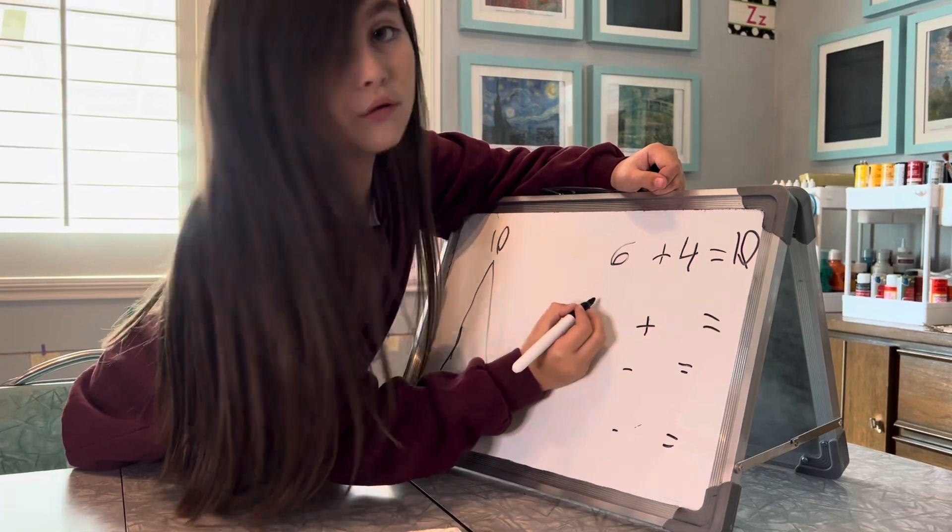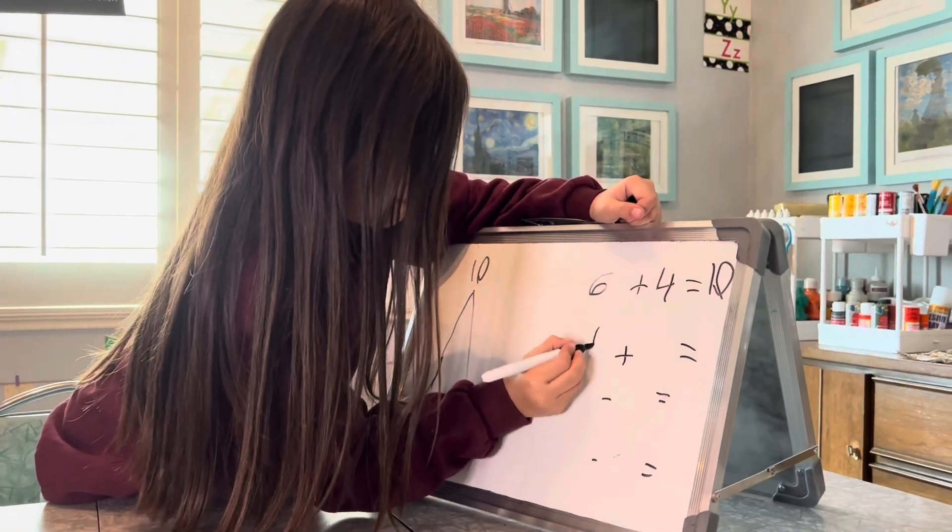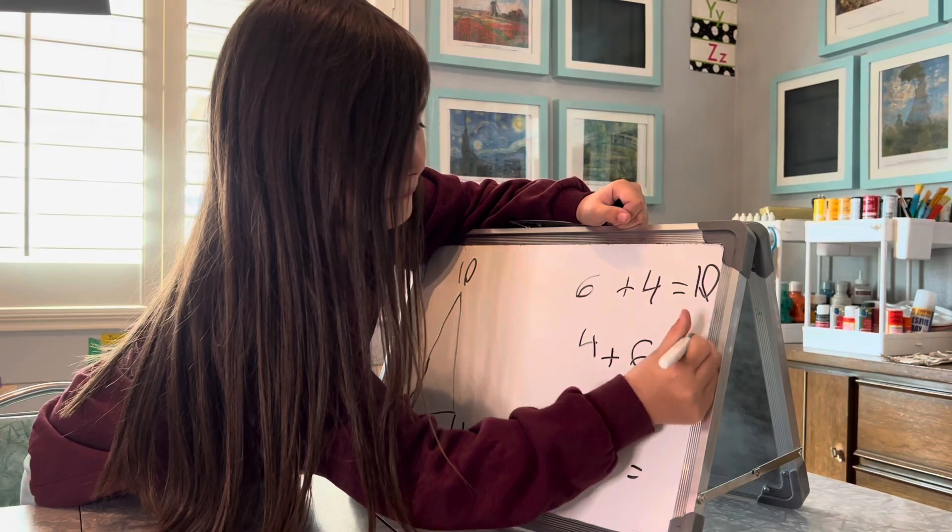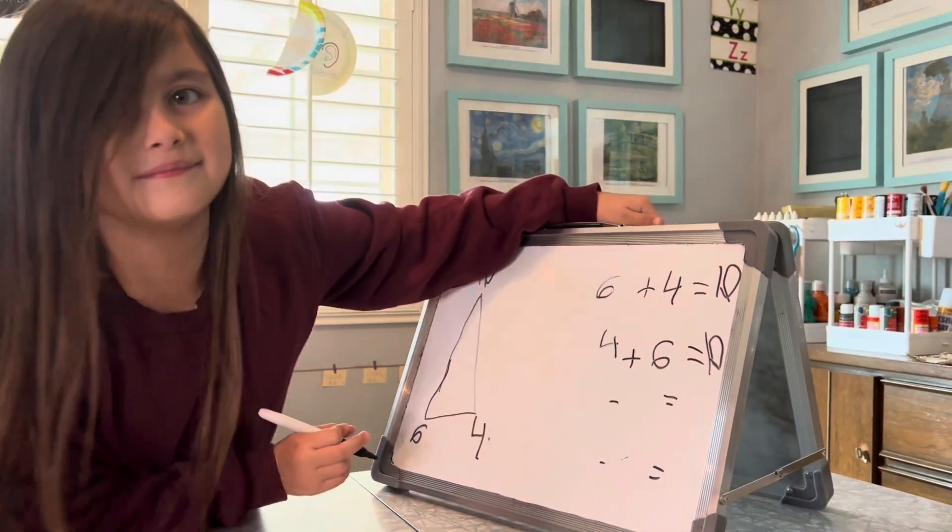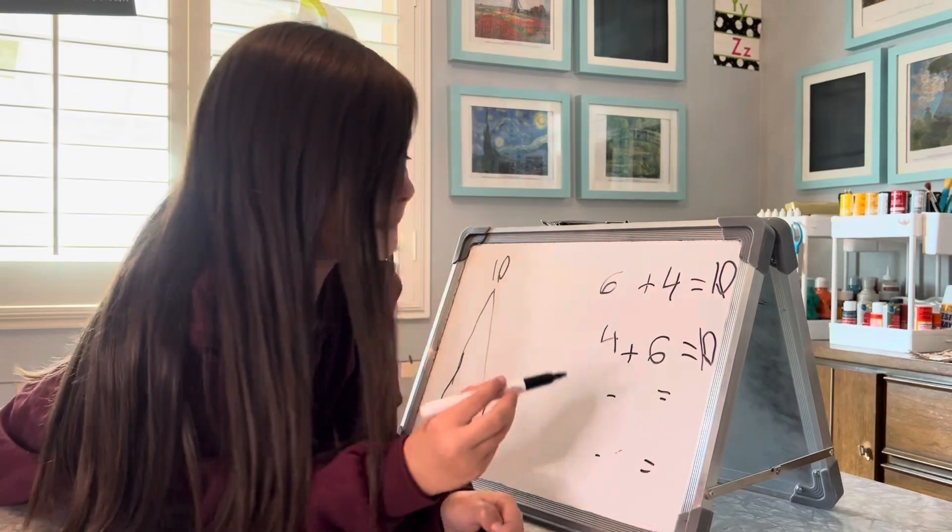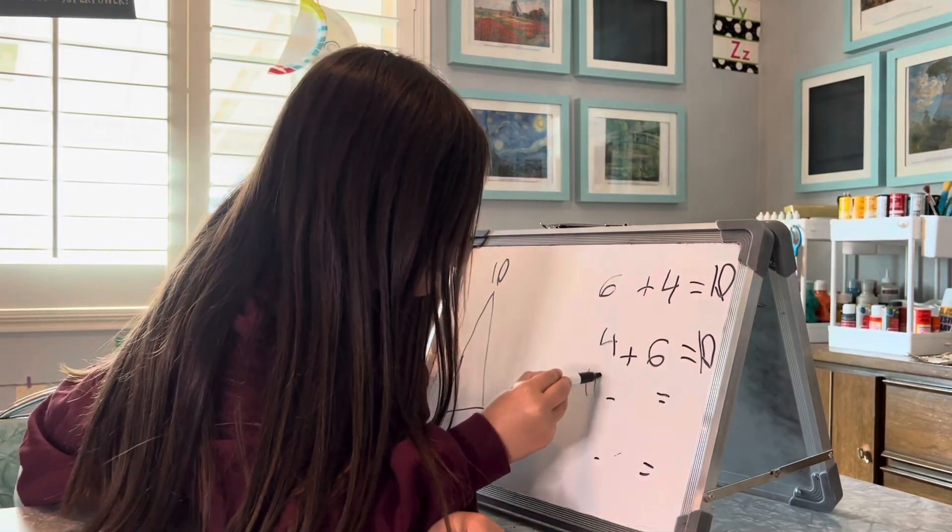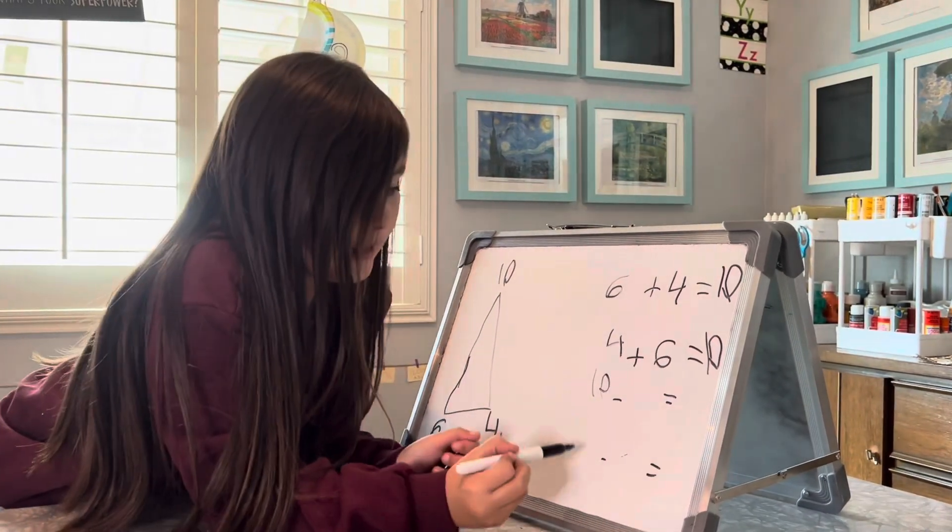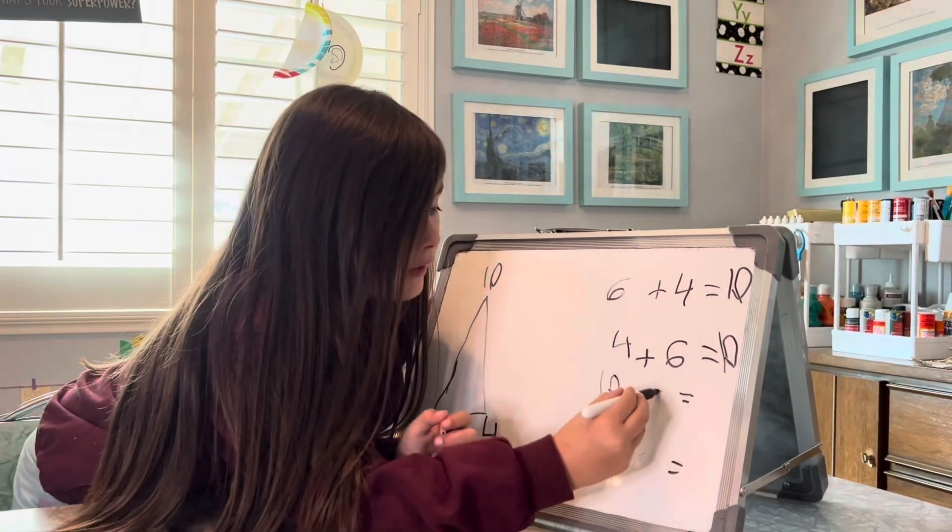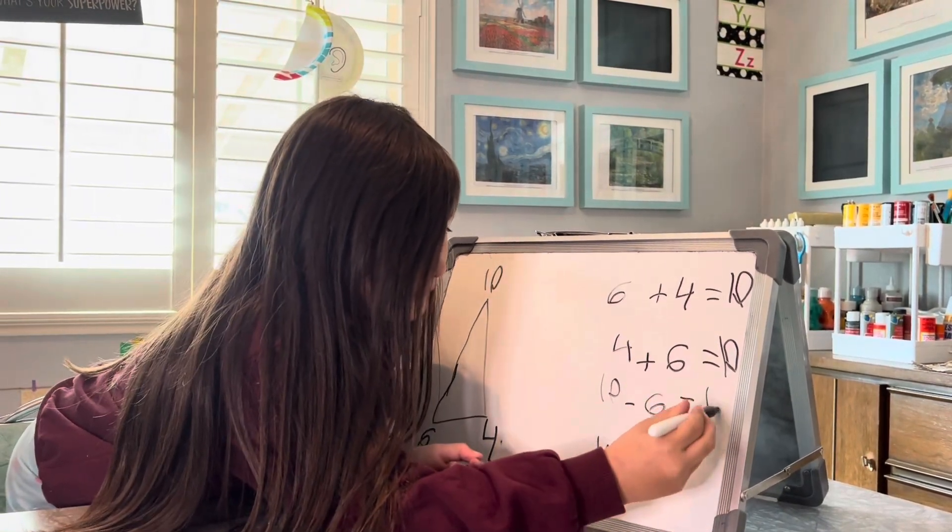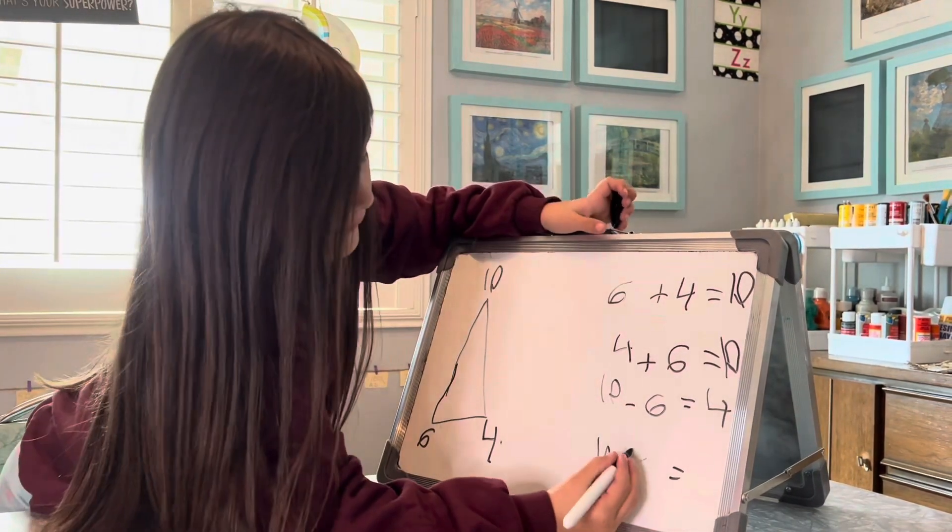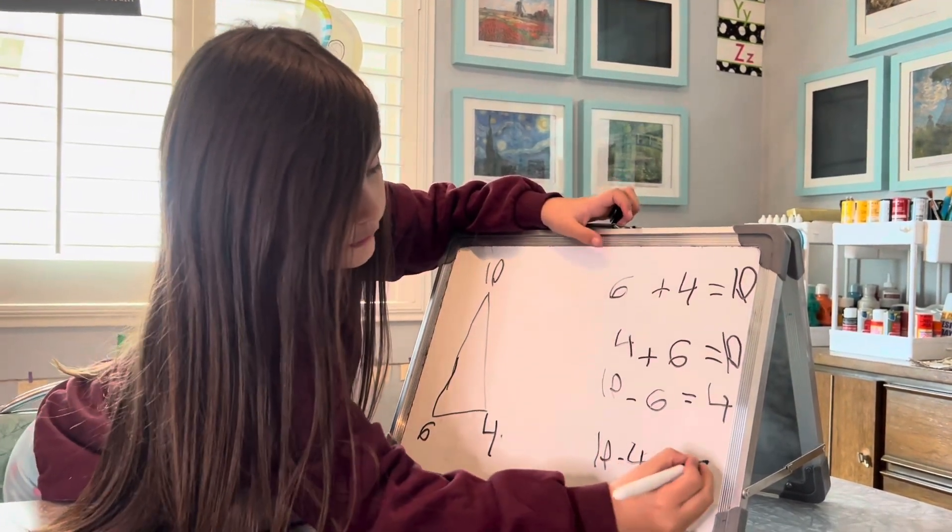And they both equal ten, because it's a ten problem. Now for the subtract. Remember, the big number goes at the front. Ten take away six equals four. Ten take away four equals six.